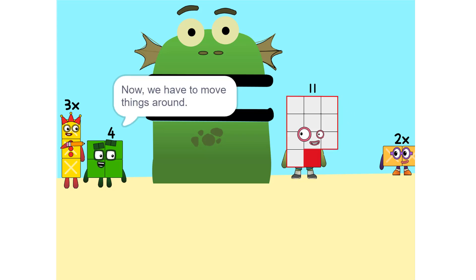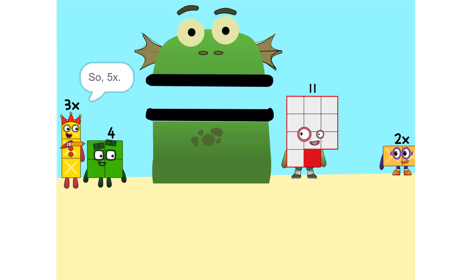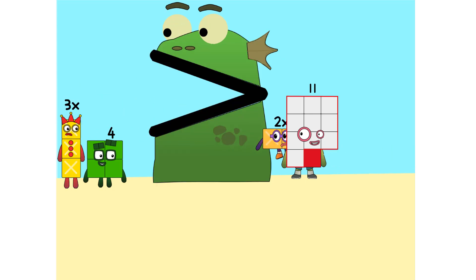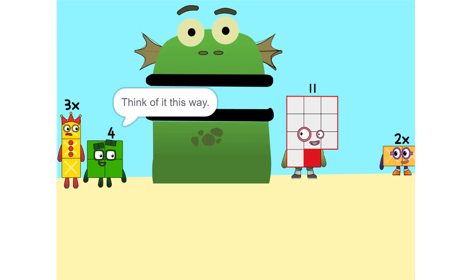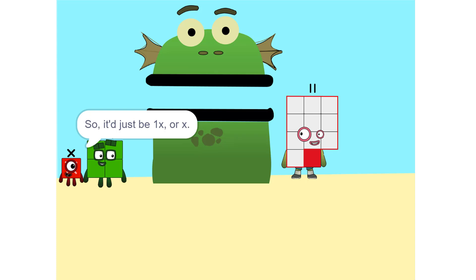Now we have to move things around. We have to move this 2X to this side. So, 5X. So if it's positive, it becomes negative and vice versa. Why? Think of it this way. You're subtracting 2X from each side. Oh. So it'd just be 1X or X. Correct.